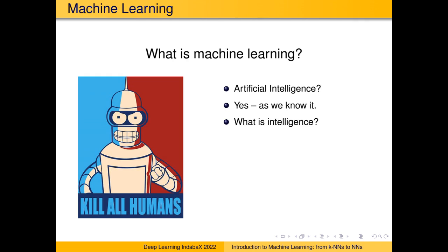Maybe we should take a step back and try to define intelligence itself. If we want to create artificial intelligence, we obviously have some notion of what intelligence means. What is it exactly that we are trying to model? The ability to learn — yes. We shouldn't be so self-entitled to think that only humans possess intelligence. Cats and dogs are also intelligent, in my opinion.